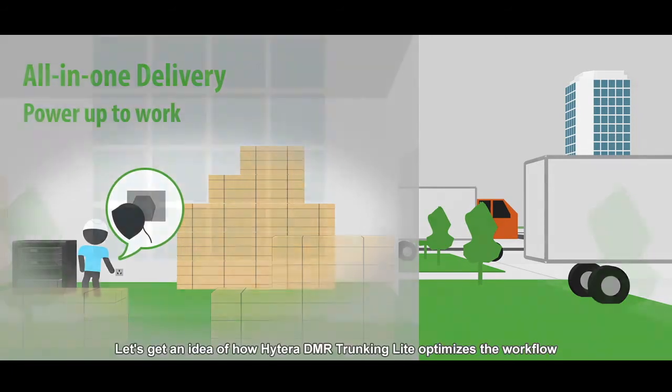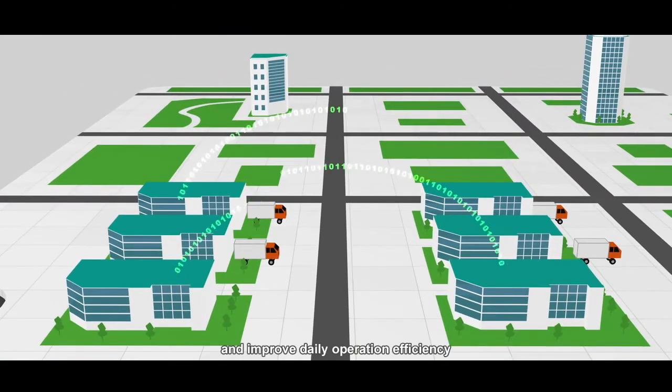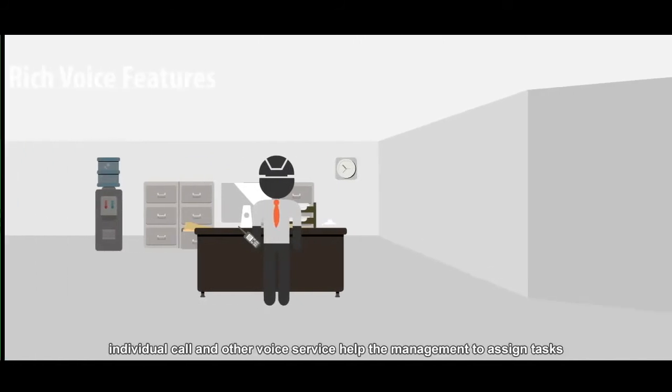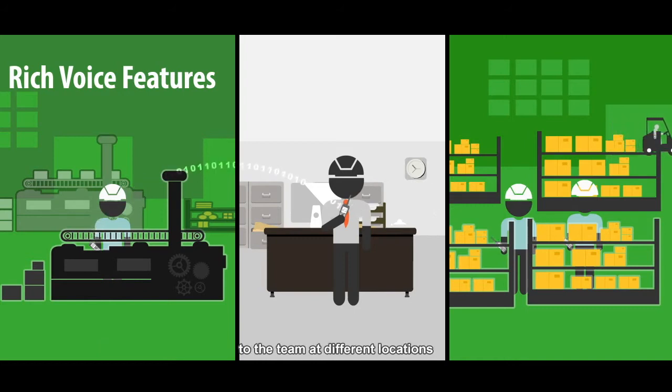Let's get an idea of how Hytera DMR trunking light optimizes the workflow and improves daily operation efficiency. Group call, individual call, and other voice services help the management assign tasks to the team at different locations, realizing consistent procedure and consensus among the staff.